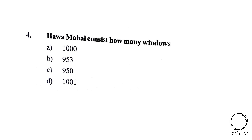Next, Hawa Mahal consists of how many windows? A. Thousand, B. 953, C. 950, D. 1001. The right answer is option B, 953.